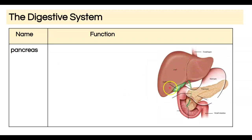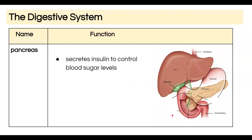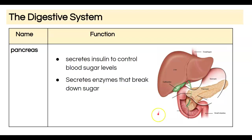The pancreas is another accessory organ that also injects into the small intestine. Its job is to secrete insulin, which controls blood sugar levels — we'll cover exactly how in grade 12 when we discuss the endocrine system. The pancreas also secretes pancreatic amylase, an enzyme that helps break down sugar. That covers digestion at the grade 10 level — if you have any questions please reach out via our Zoom meeting.